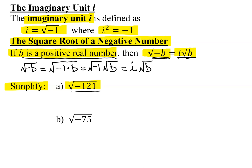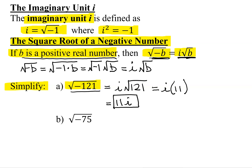So let's look at our first example. The first thing is we're going to convert it into the i format, because we have the square root of a negative number. So it's going to become i times the square root of 121. Hopefully you remember that 121 is a perfect square. So this is i times the square root of 121, which is 11. So this is just 11i. That is our first example simplified.